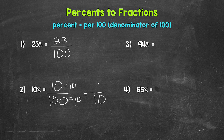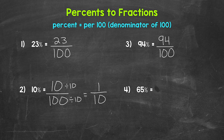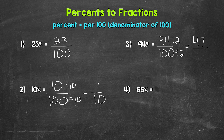Let's move on to number three, where we have 94%. We write this as 94 over 100, 94 hundredths. We can simplify here — we have a greatest common factor of 2. 94 divided by 2 is 47, and 100 divided by 2 is 50. So we get 47 over 50, 47 fiftieths. The only common factor between 47 and 50 is one, so we are done.